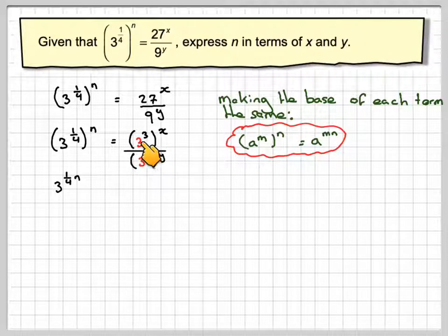We can do the same here. This will be 3 to the 3x. And the same here. This will be 3 to the 2y.